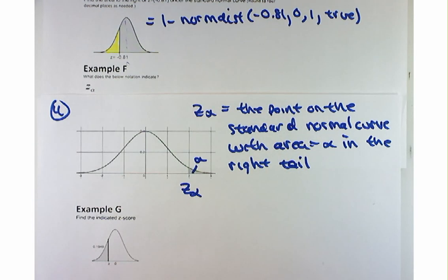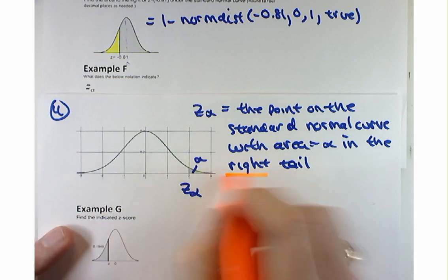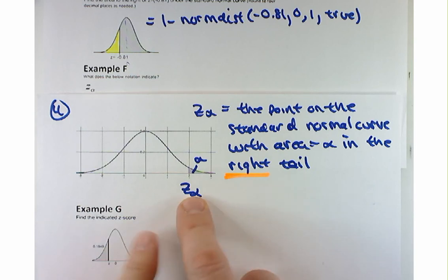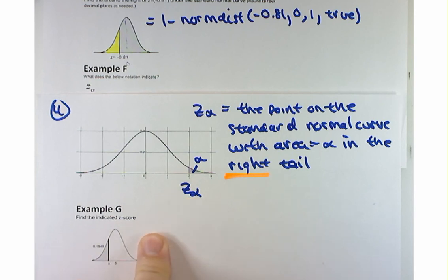One thing I want to be very clear about and stress: this notation — which you're going to see throughout the rest of the course — you'll see T sub alpha, chi square sub alpha, maybe F sub alpha. We'll have a lot of different distributions. But this notation always means the area in the right tail. Always the right tail, regardless of how it looks.